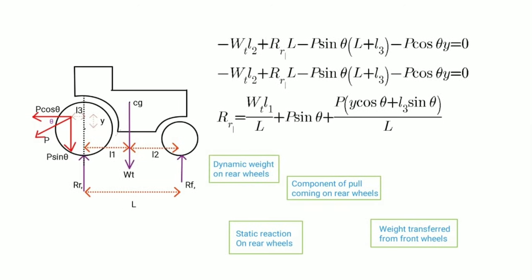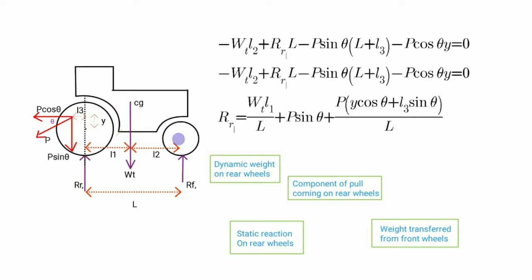Now we will discuss about moments. Let's take moment around front axle. When we see from front axle, moment due to RR dash is positive as RR dash into L. And moments due to Wt, P sin theta, and P cos theta are negative, written as minus Wt L2 minus P sin theta into L plus L3 and minus P cos theta into h, respectively. By taking moments about front axle, we can find value RR dash. In this equation, RR dash is dynamic reaction on rear wheels. Wt into L1 divided by L is static reaction on rear wheels. P sin theta is vertical component of pull coming on rear wheels. And P into h cos theta plus L3 sin theta divided by L is the weight transferred from front wheels to rear wheels due to pull. It adds weight on rear wheels.